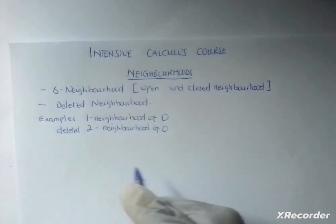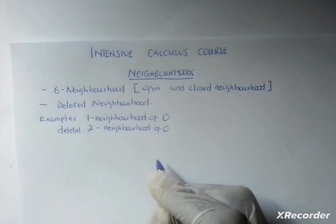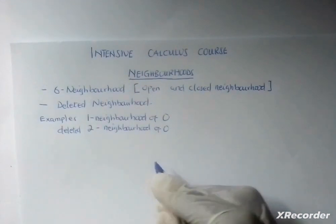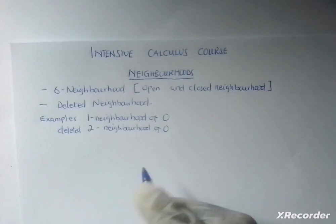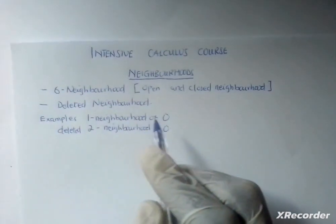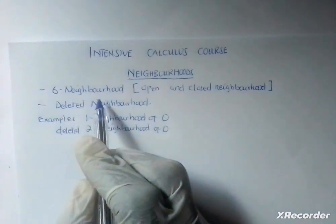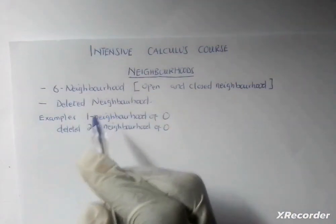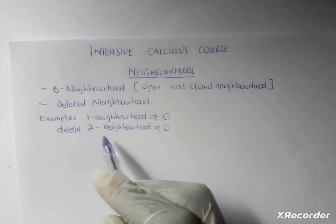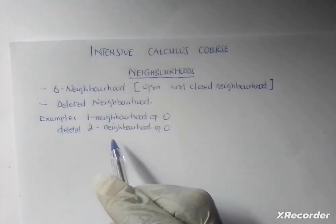Hello class, welcome back to another class of the intensive course. In this class we are going to treat neighborhoods. Kindly watch the previous videos if this is your first time visiting this channel so that you get a straight understanding of the entire course. In this course we are going to look at neighborhoods — under that we should expect delta neighborhood, open and closed neighborhood, and deleted neighborhoods. Then we will take some true examples. Kindly watch this video to the end and don't forget to subscribe and like.